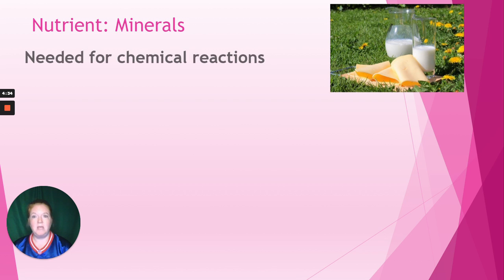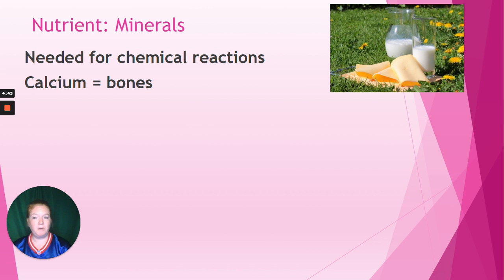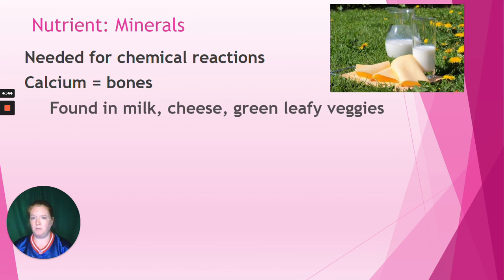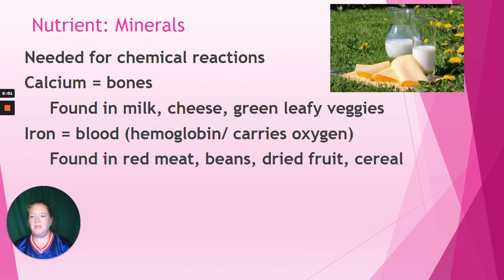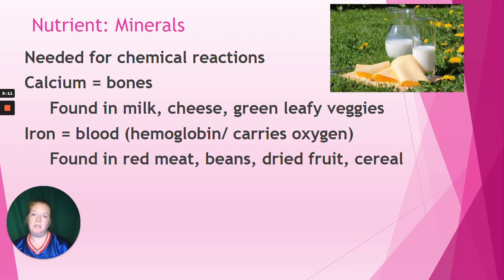Then we have minerals, which are also needed for chemical reactions. I'll focus on a few. Calcium is present in our bones and needed for their strength — it's found in milk and cheese, but if you're vegan you can still get plenty, for example from green leafy vegetables. Iron is important for blood; it's found in hemoglobin that carries oxygen. You can get iron from red meat, but also beans, dried fruit, and fortified cereals, which typically have iron added.